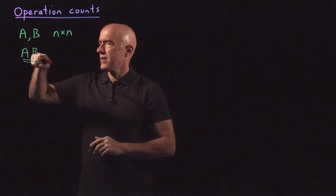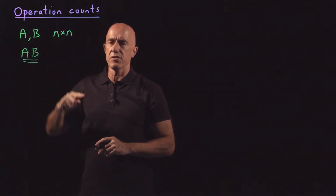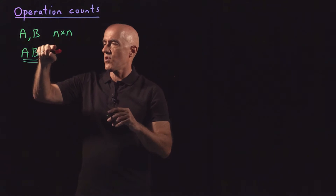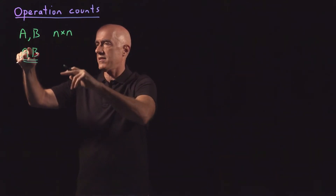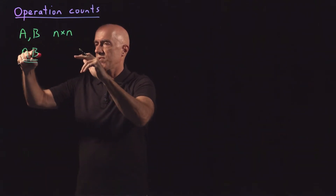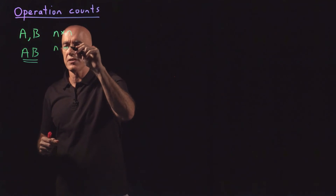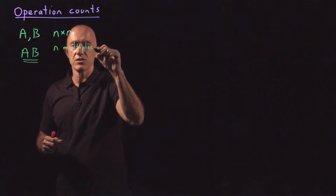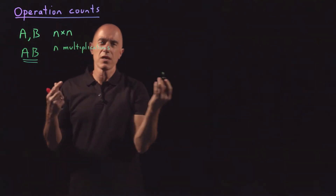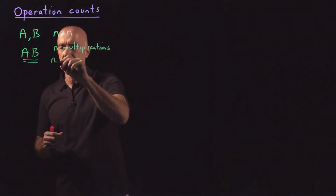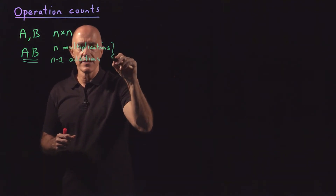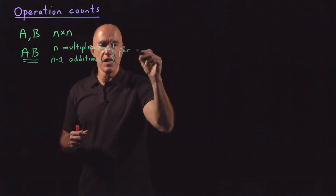How many multiplications are required for each element? To calculate the first element, we go across the first row of A and down the first column of B, and we have n elements that are multiplied. So we need n multiplications per element, and then n minus 1 additions. This is per element.